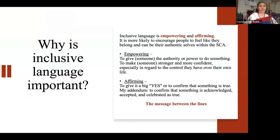Why is inclusive language important? It is empowering and affirming. It is more likely to encourage people to feel like they belong and can be their authentic selves within the SCA. Empowering simply means to give someone the authority or power to do something. Affirming is to confirm — or as I add — to acknowledge, accept, and celebrate something as true. Acknowledging or accepting something is one thing, but we can do so without celebrating it. I think that celebration is the most important part of inclusive language.